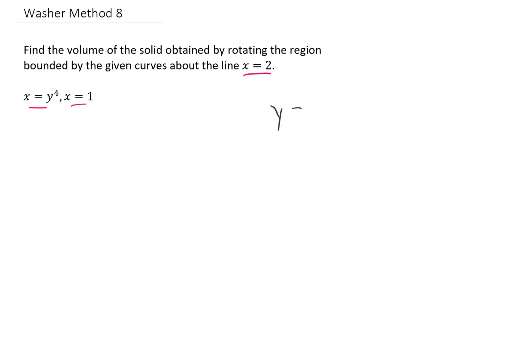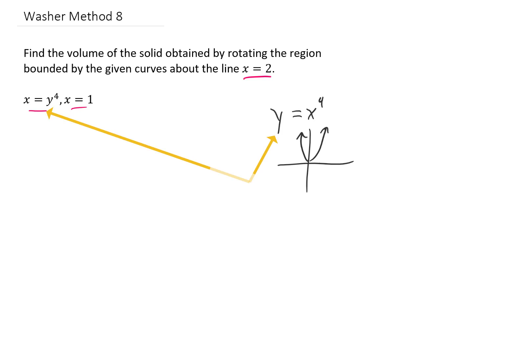The first thing that I want to do is remind you that y equals x to the fourth would look like a pretty skinny parabola opening upwards. If we switch the x and y values in that equation, what that does is it just switches all the x and y values in the equation we just graphed.